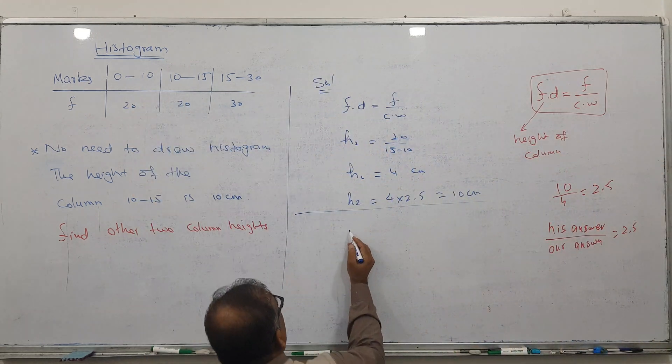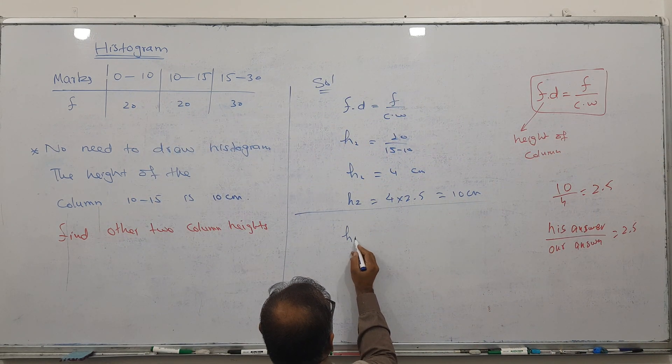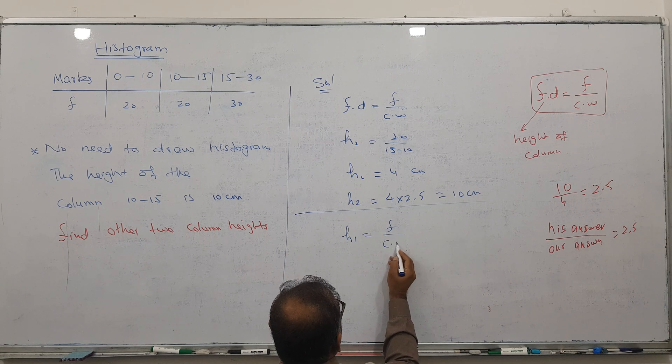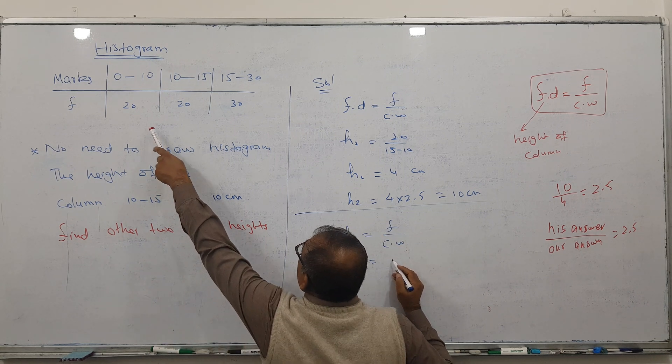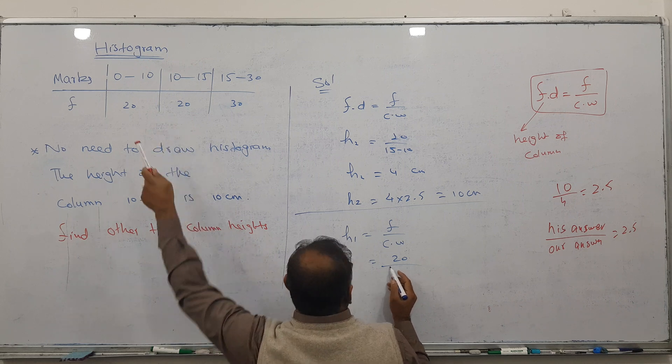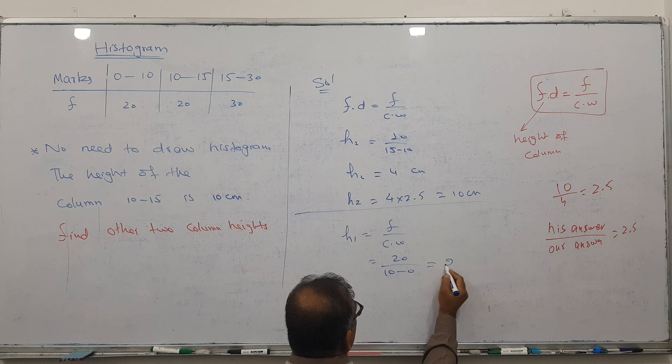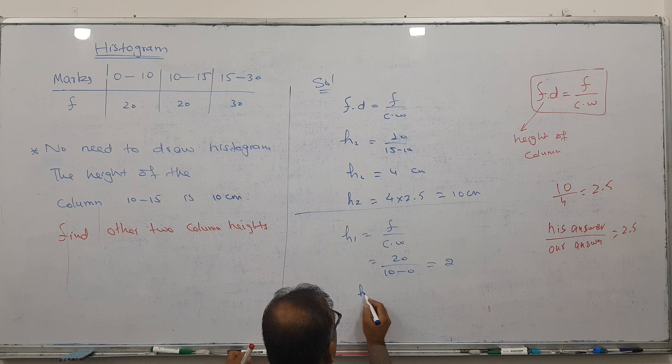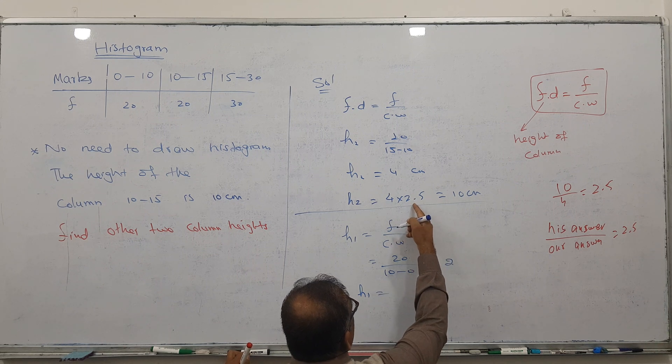I think we got the hint. Now I will find height 1. The formula is frequency divided by class width. What is the frequency? 20. What is the class width? 10 minus 0. So we got 2.